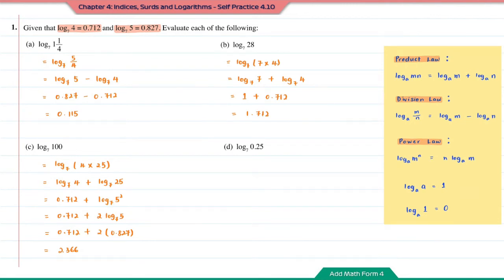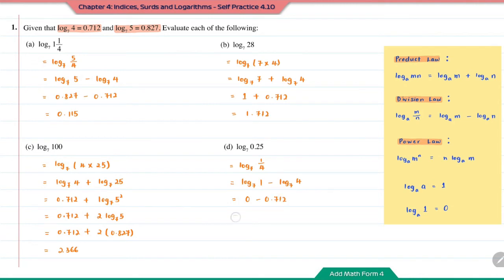Question D: log base 7 of 0.25. We can change the decimal 0.25 into a fraction — it's going to be 1 over 4. Using the division law, this is log base 7 of 1 minus log base 7 of 4. Log base A of 1 gives 0, so log base 7 of 1 is 0. The value of log base 7 of 4 is 0.712, so after subtracting you get negative 0.712.